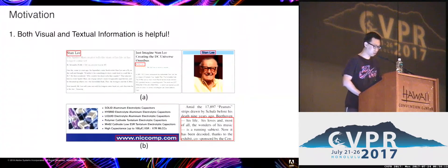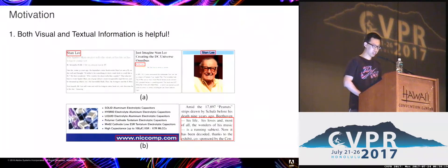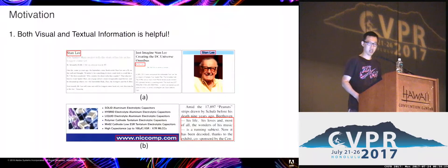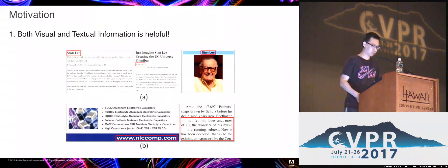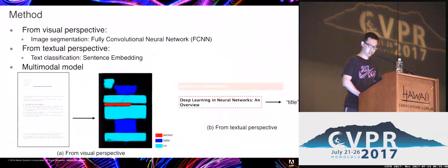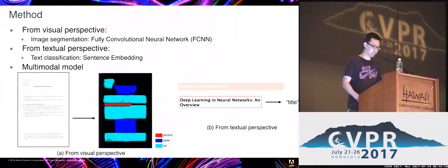Here's our motivation. We want to utilize both visual and textual information. In figure A, although the texts are the same, the semantic roles are very different based on visual appearance — you can see a title, an author, and a caption for a figure. In figure B, although it looks like a caption and a list, after reading the text you find that they are not. From a visual perspective, we treat it as a semantic segmentation task, because we care about regions with irregular, non-rectangular shapes. We also want a unified model to utilize both textual and visual information.